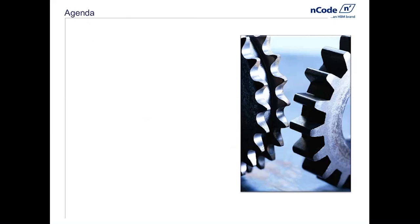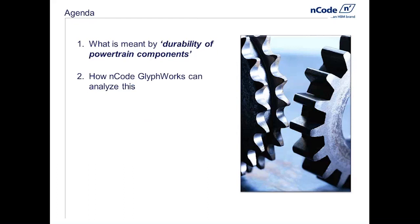Here's our basic agenda for the next 35 or 40 minutes. First, I need to define what I mean by the durability of powertrain components — if I can't define what the problem is, then obviously the rest of this meeting will be very challenged. Second, we need to look at how a piece of software like ENCODE GlyphWorks can be used with measured test data to help us answer questions like: what is the durability of our rotating component, and how long until a crack develops? Third, we're going to look at a software demonstration of ENCODE GlyphWorks to see in a live way how we can analyze these problems.